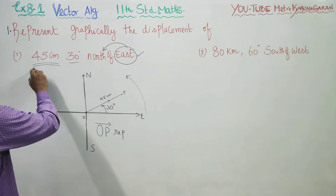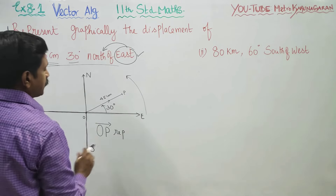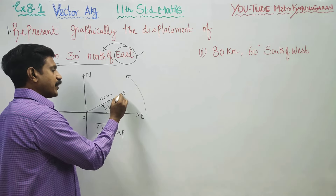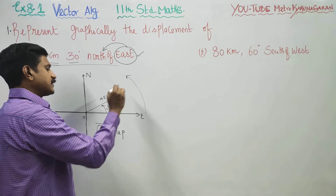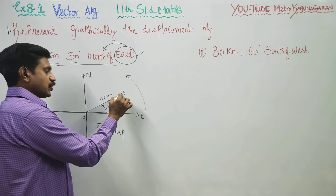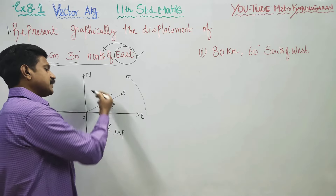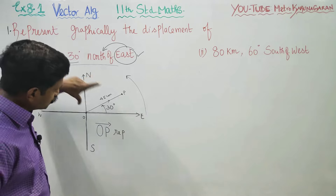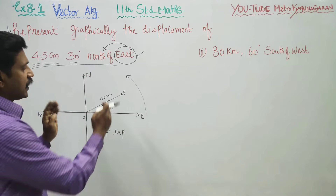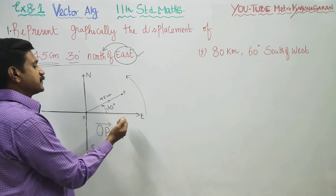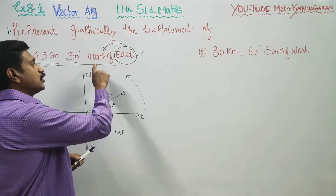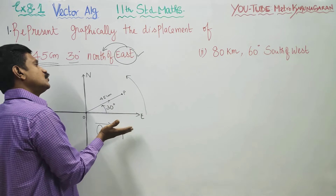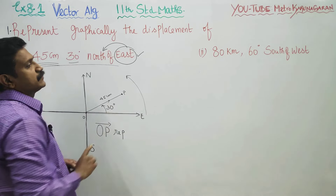This is my question. This is my OP vector. In the OP vector, you can represent the point. In the degree, 30 degrees in the direction. In the position you have 45 cm. North of east: start from east and move towards north.